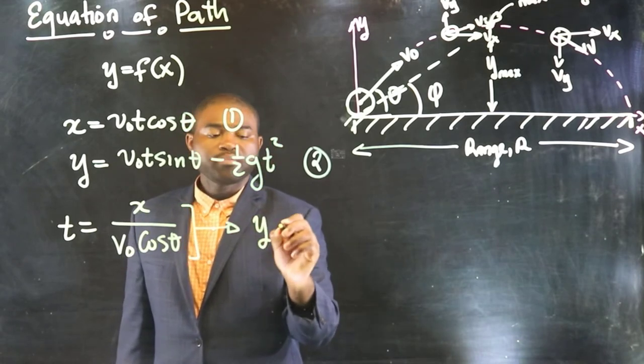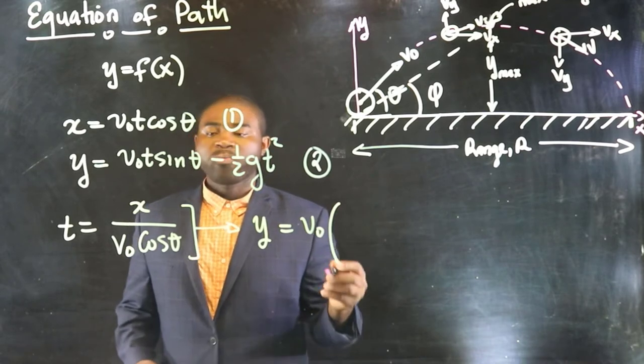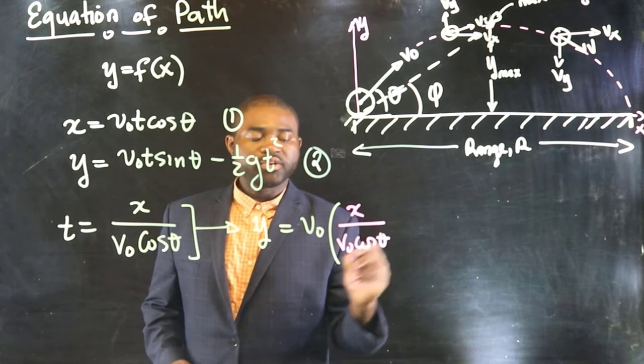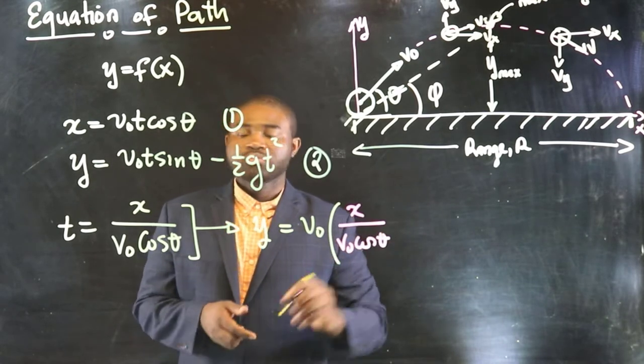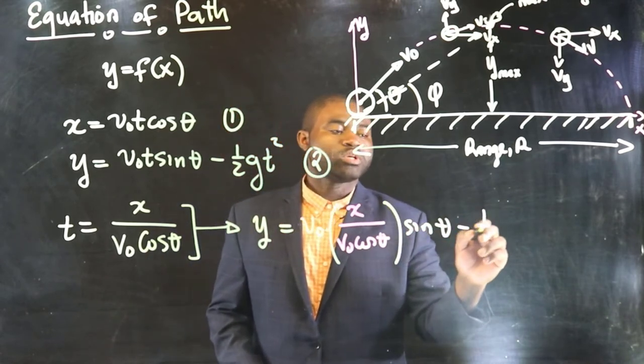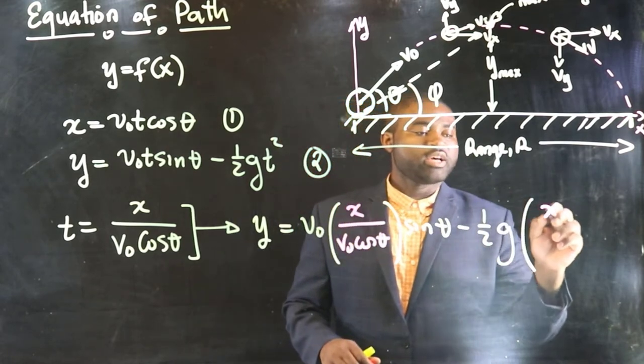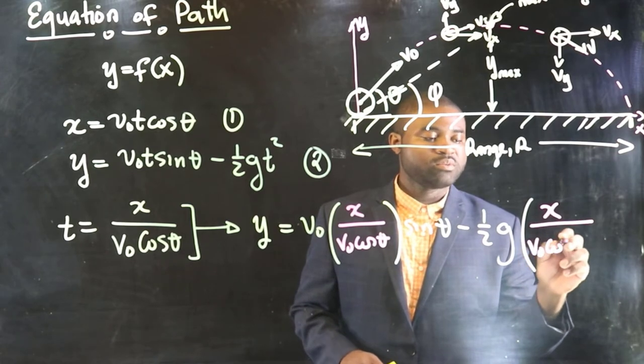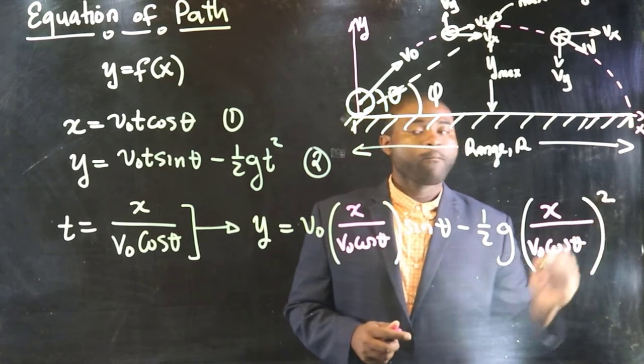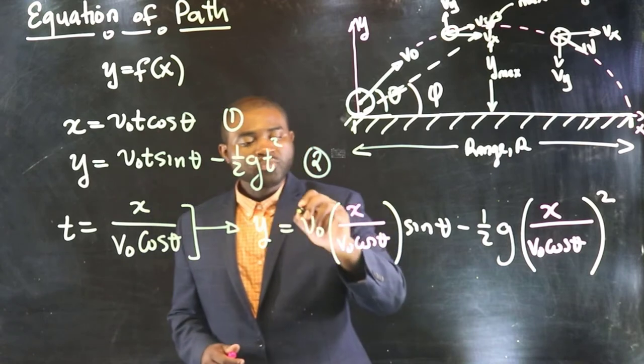We will have y equal to v₀ bracket x divided by v₀ cos θ, sin θ minus one half g bracket, x divided by v₀ cos θ all squared. So, all we need to do is simplify this expression.